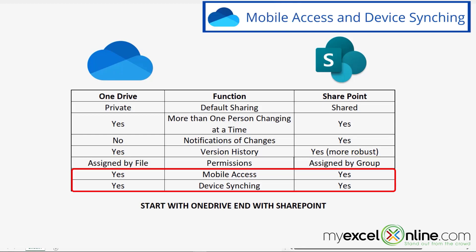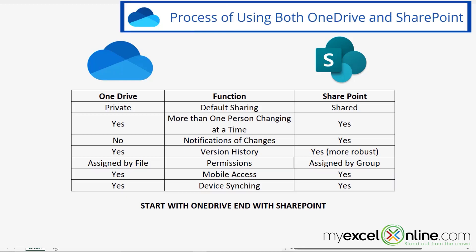For mobile access, you are able to access your OneDrive files remotely on any device you'd like, and SharePoint also has mobile access. So those are pretty equal across the board. The same goes for device syncing — all of your devices can sync to OneDrive, and all of your devices can sync to SharePoint.